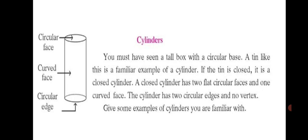Let's learn about cylinders. You must have seen a tall box with a circular base — a tin like this is a familiar example of a cylinder. If the tin is closed, it is a closed cylinder. A closed cylinder has 2 flat surfaces which are circular and 1 curved face. You can see the circular face one on top, then circular face down and a curved face in the middle. The cylinder has 2 circular edges and no vertex.